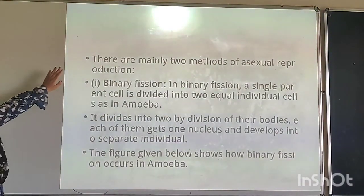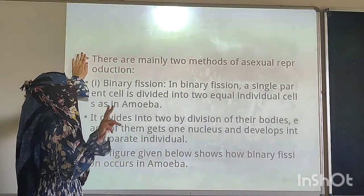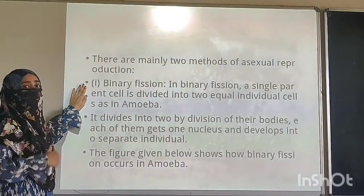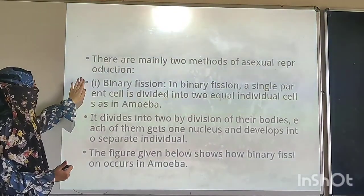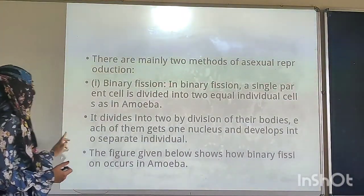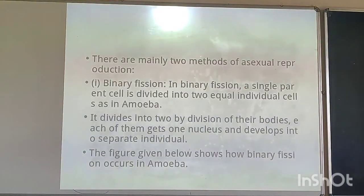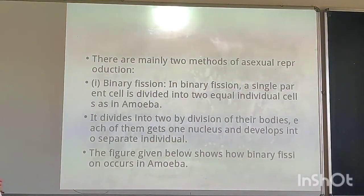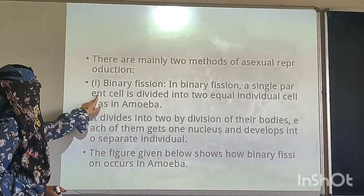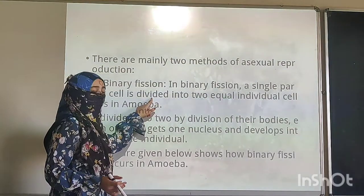Now we have to specify the methods. Basically there are two methods: one is binary fission and another is budding. First we will understand how to explain binary fission. Binary fission is shown with a diagram. In binary fission, a single parent cell is divided.